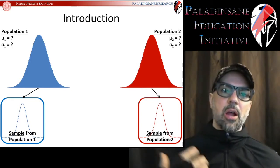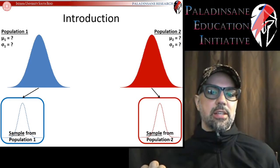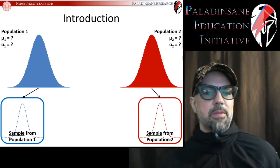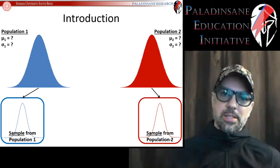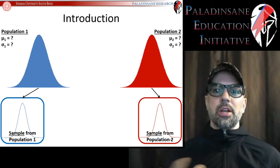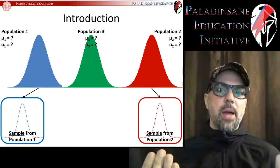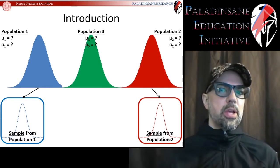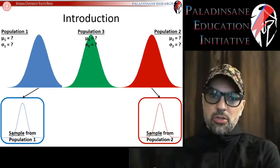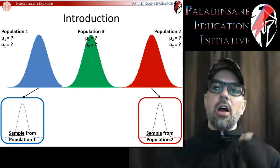However, not every question asked in science — and especially not in psychology — is between just two populations. While a lot of questions compare a drug group versus a control group, or therapy versus no therapy, many other questions don't just have two alternatives but have more than two. What if we want to know if there's a difference between three populations? That kind of question comes up in psychology all the time.